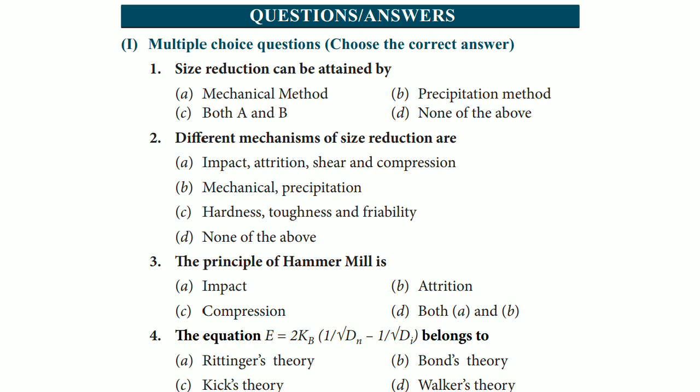Moving to the next question, that is different mechanisms of size reduction are: option A impact, attrition, shear and compression, option B mechanical precipitation, option C hardness, toughness and friability, and option D none of the above.